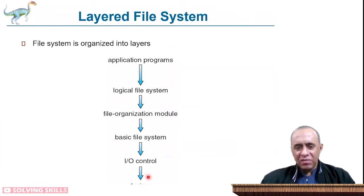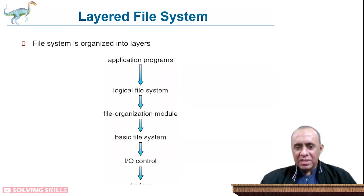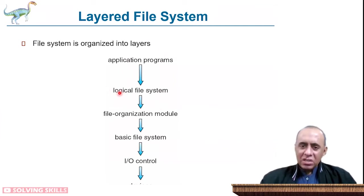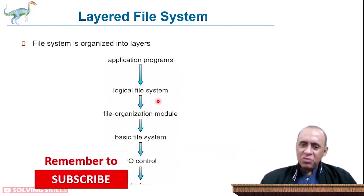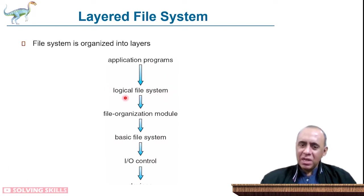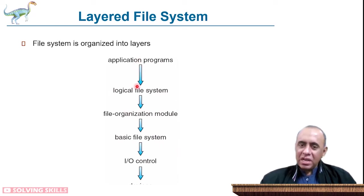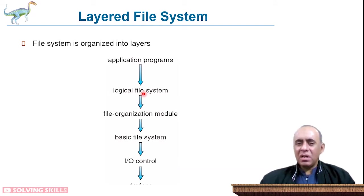The I/O control and device layer is something we don't concern ourselves with. We are actually operating at the logical file system level. We will look at how the file organization module is implemented and what the basic file system is. Users only see the logical view of files — in a graphical user interface you see an icon, and in the command line interface you see a file name. The implementation details we will be covering in this chapter.